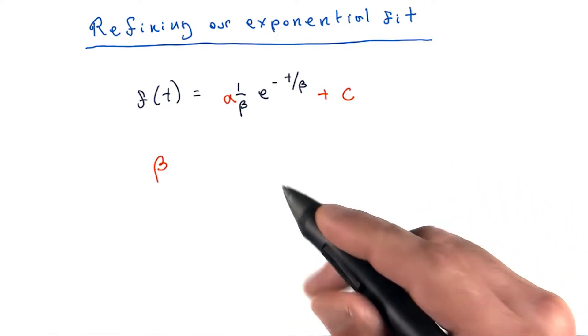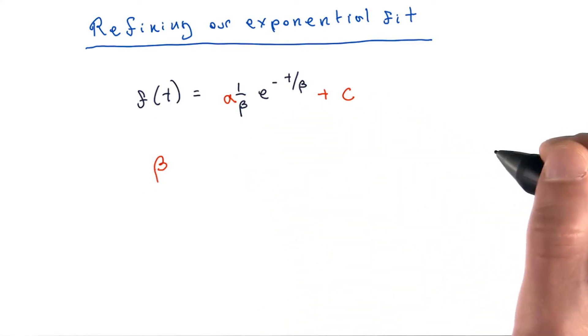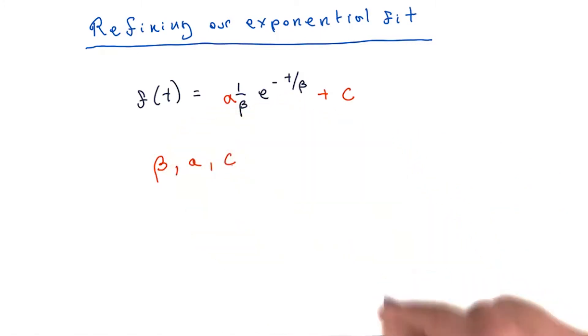Now, in addition to using the knob of beta, we're going to attempt to use two additional knobs, a and c. And the thought is, can we use the three of these together to get a fit for the PDF which is more accurate? Let's find out.